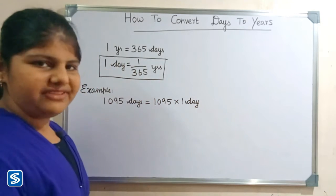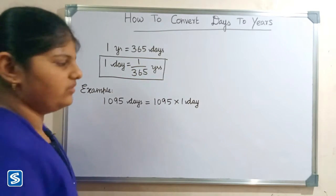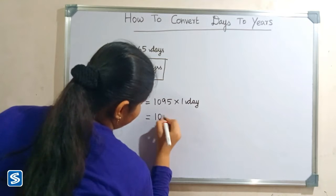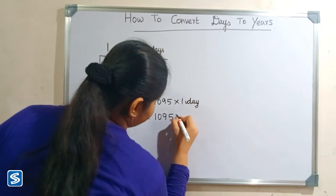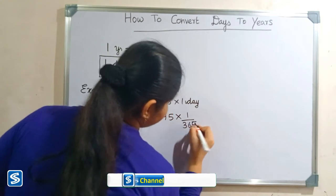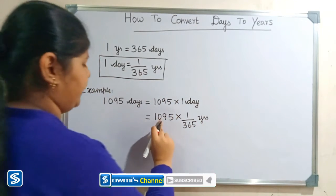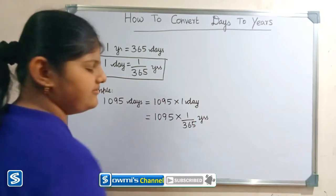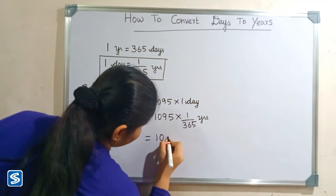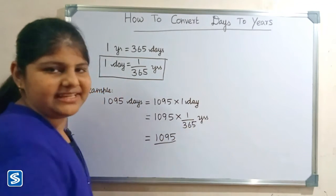Now we have to substitute 1 by 365 years in the place of one day, so 1095 multiply 1 by 365 years. 1095 multiply one will be 1095, so 1095 by 365 years.